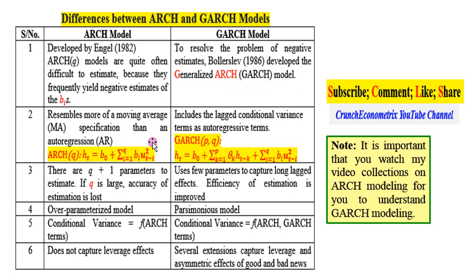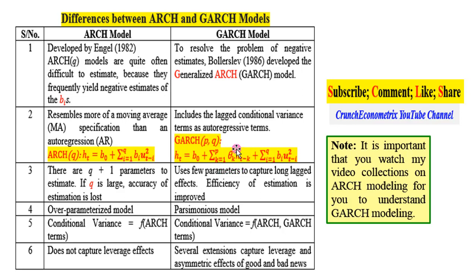The ARCH model resembles more of a moving average specification than an autoregression. This is because if you look at the typical ARCH model, it contains on the right-hand side the lag values of the error structure, so more often than not a typical ARCH model will resemble a moving average model. The GARCH model, on the other hand, includes the lagged conditional variance as autoregressive terms on the right-hand side of the model, as you can see on your screen — this is the GARCH term in this case.